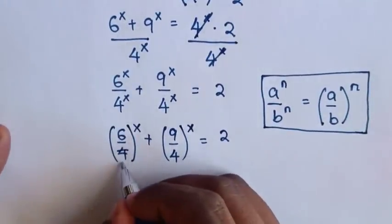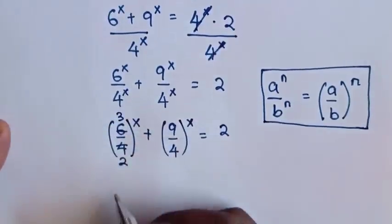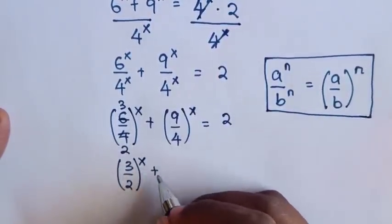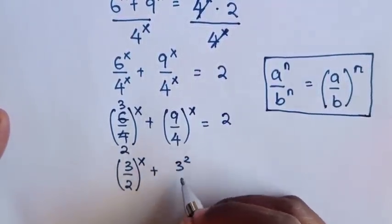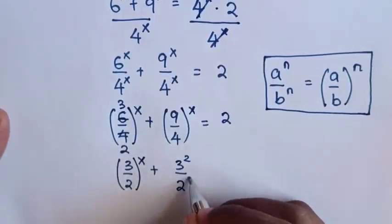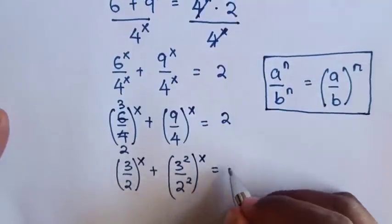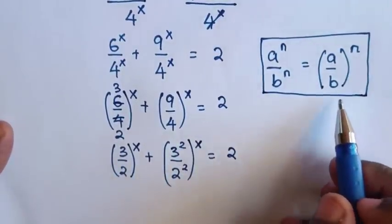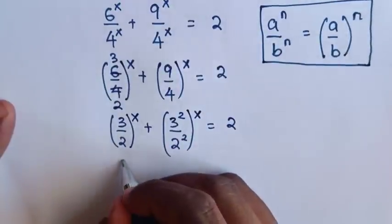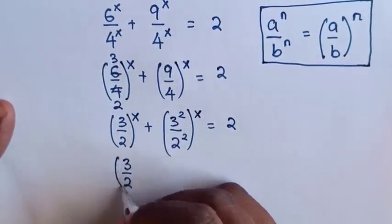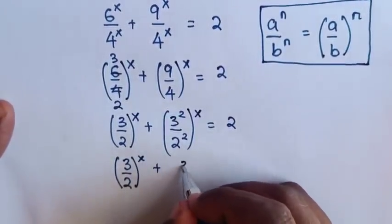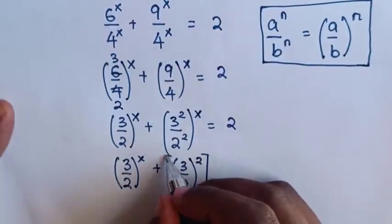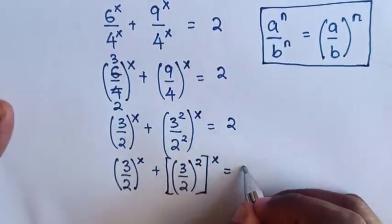To simplify, 6 divided by 2 is 3 and 4 divided by 2 is 2. So it will be 3 over 2 bracket power of x. And 9 is the same as 3 squared, over 4 which is the same as 2 squared, bracket power of x, is equal to 2.